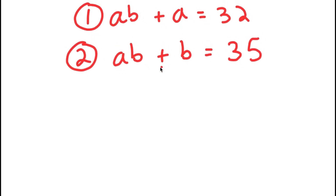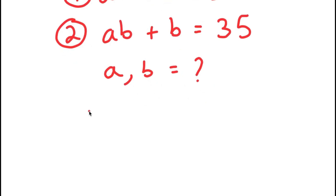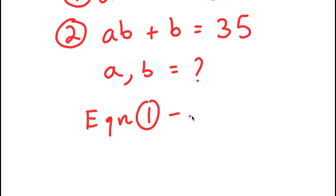To solve the system of equations, I have to find the value of A and B. To start out, what I'm going to do is subtract equation two from equation one — so equation one minus equation two.